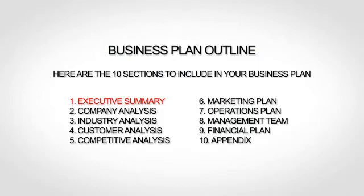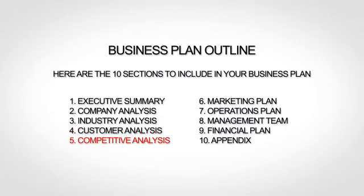The first section is your executive summary, which is essentially the introduction to your business plan. Then the next section is your company analysis, which gives a little more background. Next up is your industry analysis, where you talk about your market and trends. The fourth section is your customer analysis, where you go more in depth about your target market. The fifth section is your competitive analysis, where you provide an analysis of your competition, including what differentiates you from your competitors.